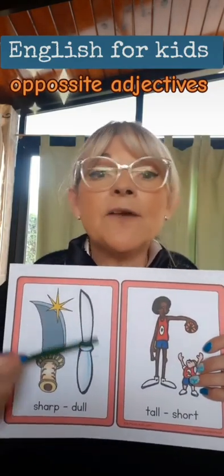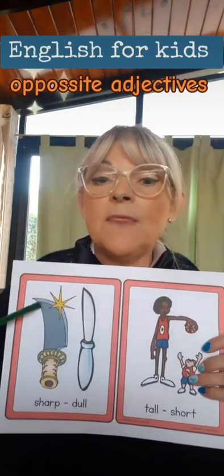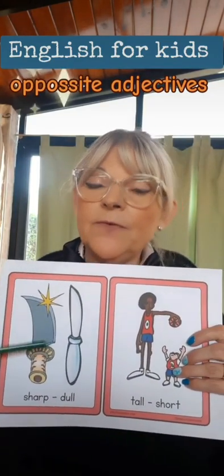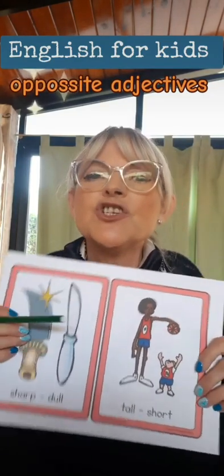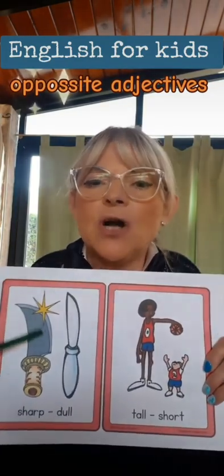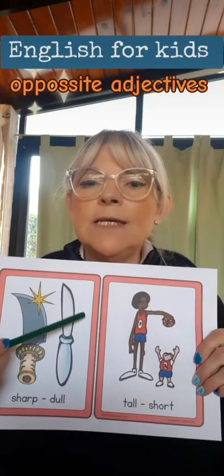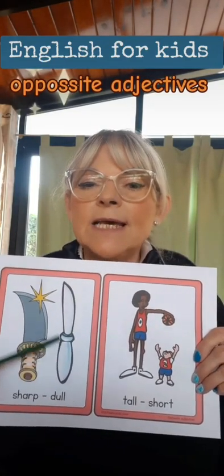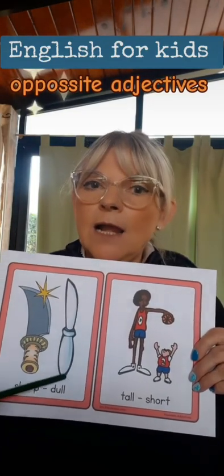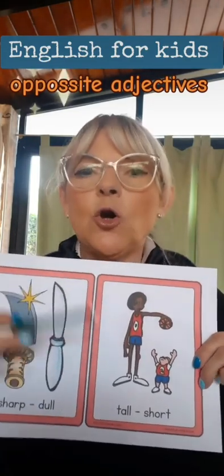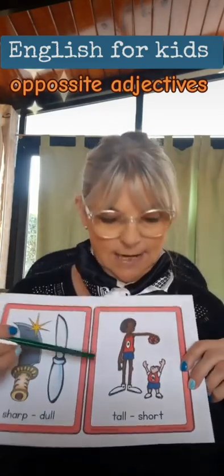These are knives. This knife is sharp. Sharp — afilado. This one is dull — sin filo, romo.